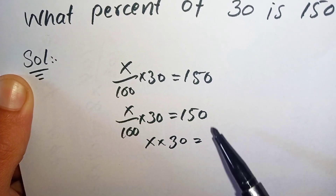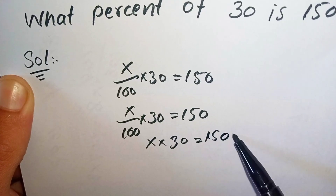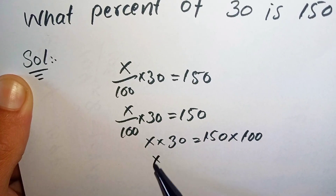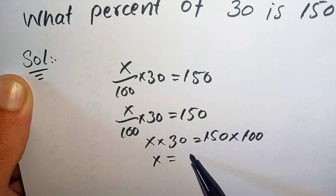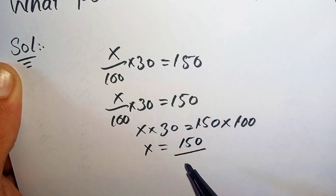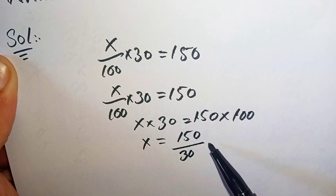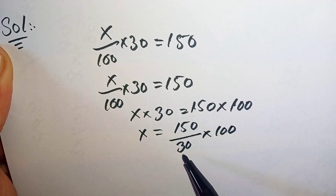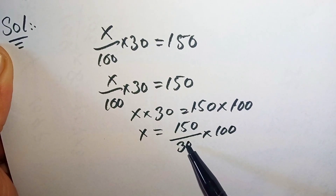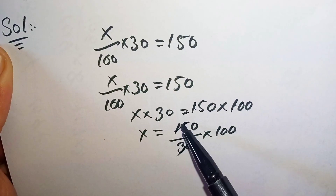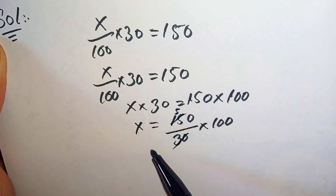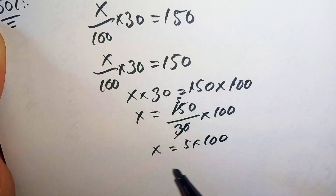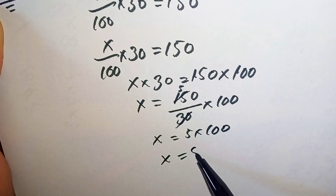So X is equal to 150 divided by 30 multiplied by 100. Divide 150 by 30: 30 times 1 is 30, 30 times 5 is 150. So X is equal to 5 times 100, so X is equal to 500.